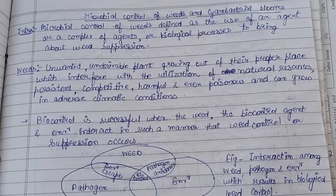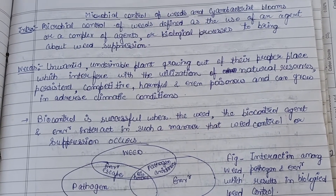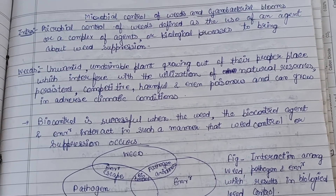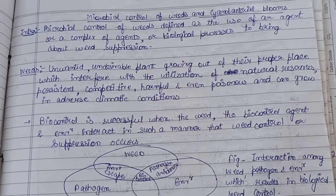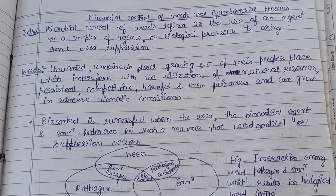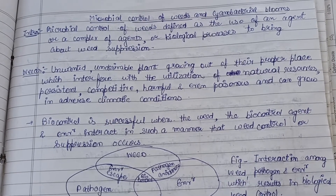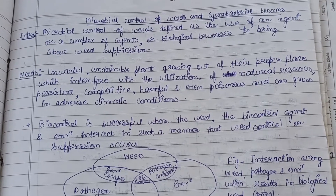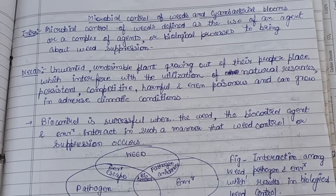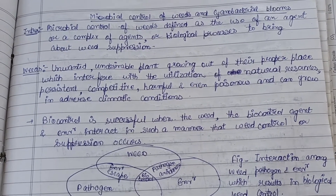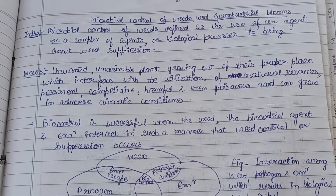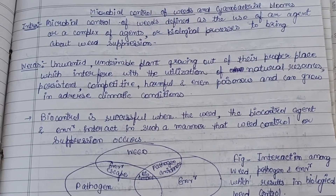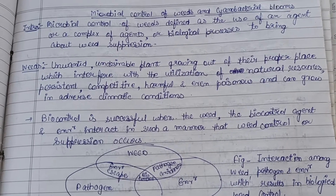Hello everyone, welcome back to my channel. Today's topic is microbial control of weeds and cyanobacterial blooms, which is basically known as the biological control methods for weeds and cyanobacterial blooms — that is, how we can utilize microorganisms for controlling weeds and cyanobacterial blooms.